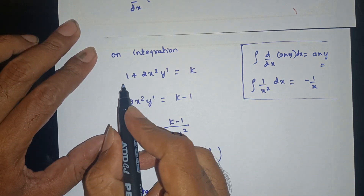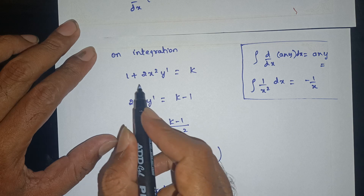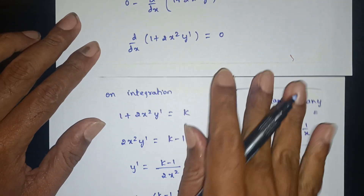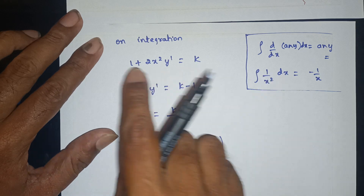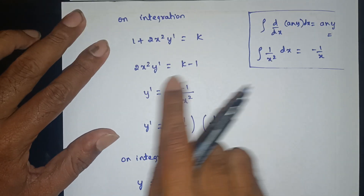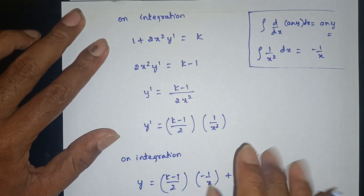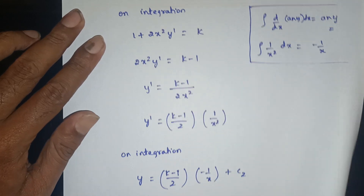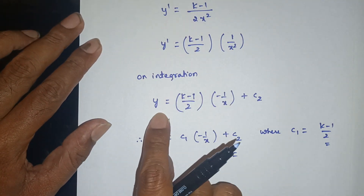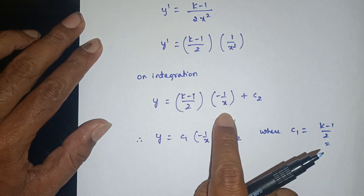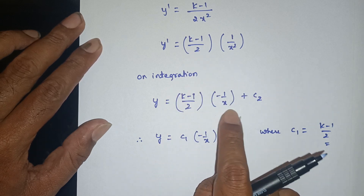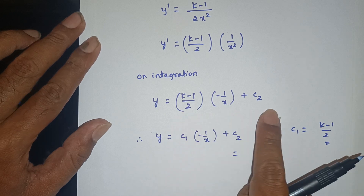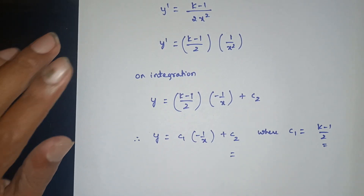Integrating d/dx gives: 1 + 2x²·y' = k, so y' = (k − 1)/(2x²) = c₁ · (1/x²). Integrating again: y = c₁·(−1/x) + c₂. This is the final solution.